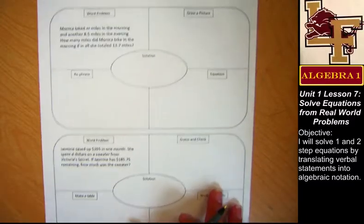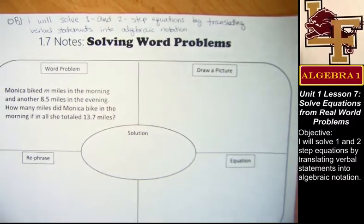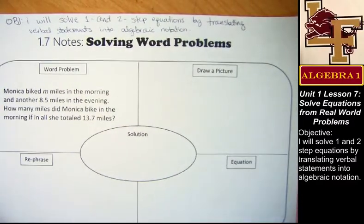So let's start with drawing a picture. Let's read this word problem. The word problem says Monica biked m miles in the morning and another 8.5 miles in the evening. How many miles did Monica bike in the morning if she totaled 13.7 miles? Don't try to answer right now. We're not worried about the answer. We're just worried about different ways we can figure out how to get the answer. So we're going to draw a picture.